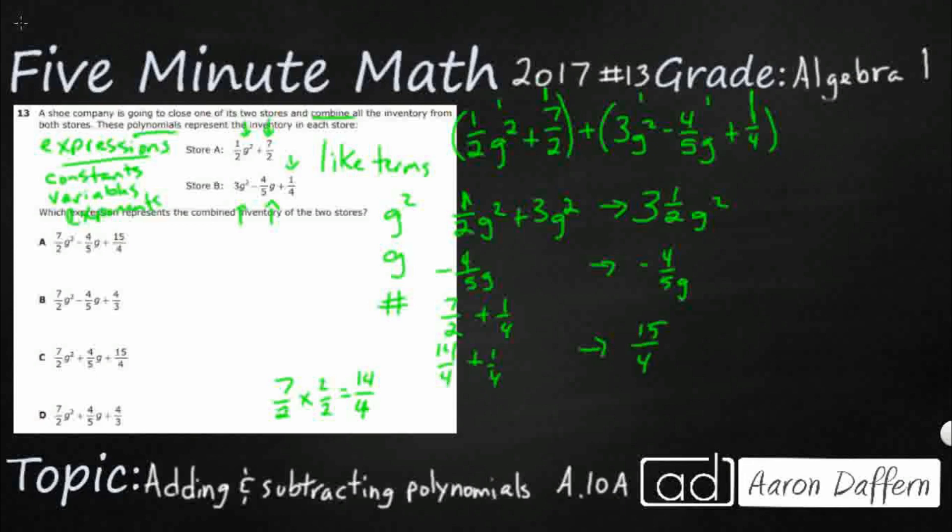So this is my new expression, I think. Three and a half G squared minus four fifths G. And then that's a positive 15 fourths. Problem is, I don't see three and a half. I see mixed numbers. No mixed numbers. I need an improper fraction. So we multiply the whole number by the denominator. That's 6. Add the numerator. That's 7. So let's make this 7 halves minus four fifths G plus 15 fourths. There we go. Our answer here is A.